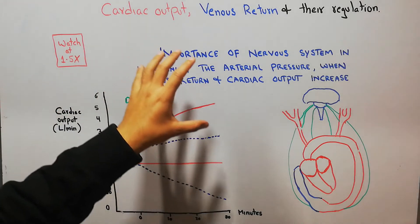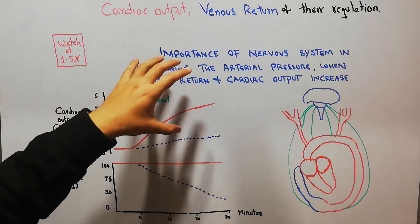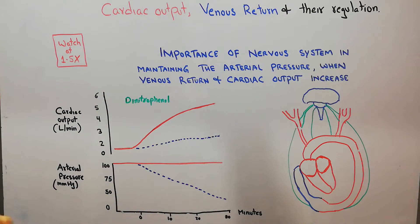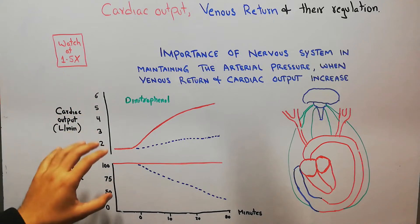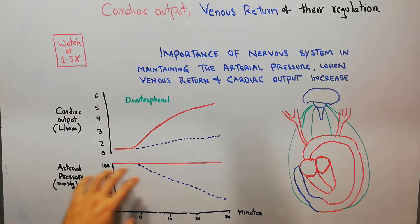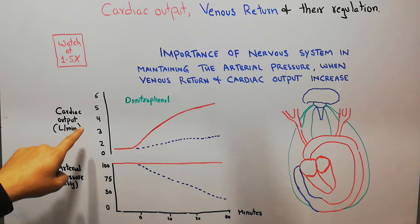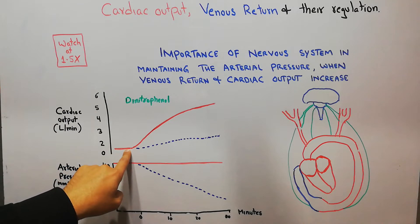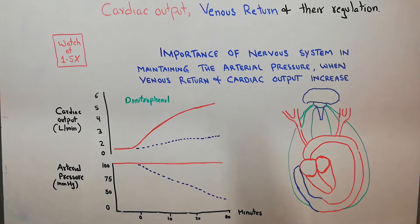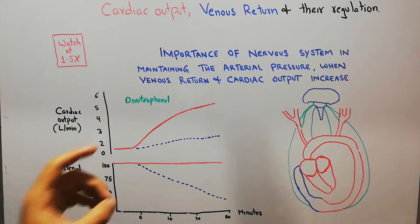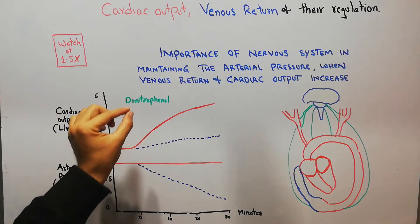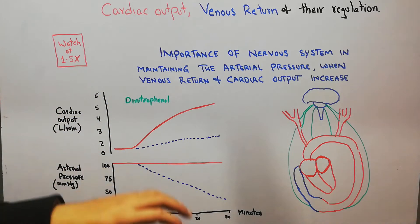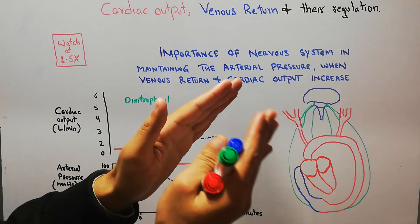To prove that the role of the nervous system is important, we will consider an experiment in which we plot the cardiac output and arterial pressure. We take an experimental animal and plot the cardiac output. The normal cardiac output is plotted, and then a drug known as dinitrophenol is given to the normal experimental animal. This drug increases the metabolism of tissues and causes dilation of the blood vessels.